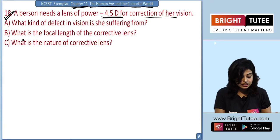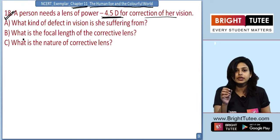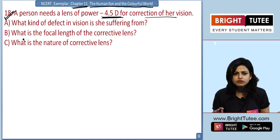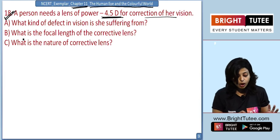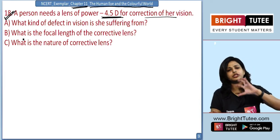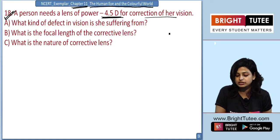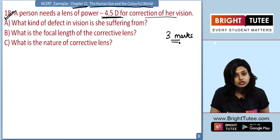Part B asks: what is the focal length of that corrective lens? We already know the power, so we have to find the focal length, which is quite easy if you remember your previous chapter. Part C asks: what is the nature of the corrective lens? Though this seems like a big numerical, it may come as three marks in your exam because there are three parts to the problem.